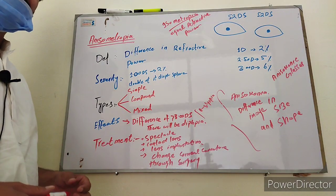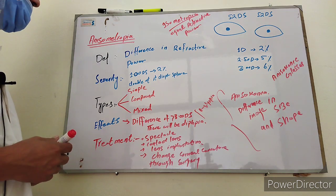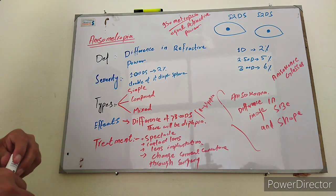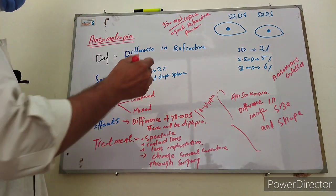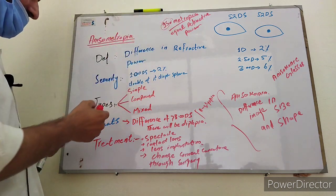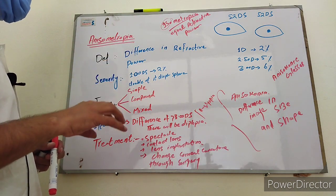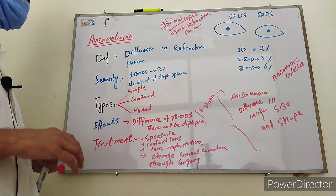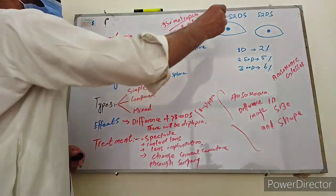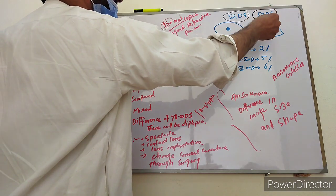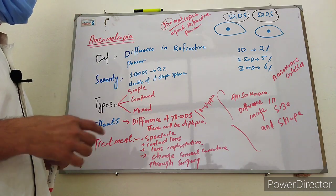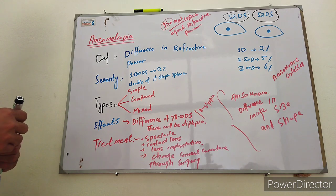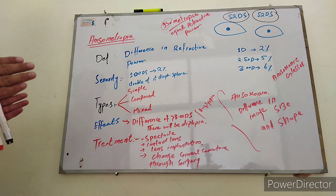Assalamualaikum students. Today our topic of discussion is anisometropia. First, what is isometropia? 'Iso' means equal — the refractive condition of the eye. If the refractive power of both eyes is equal, this is called isometropia. For example, if the refractive power of the right eye is 52 and the left eye is also 52, this condition is called isometropia.